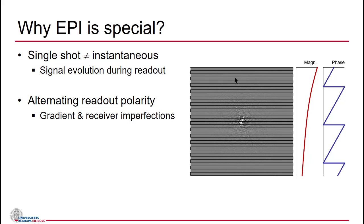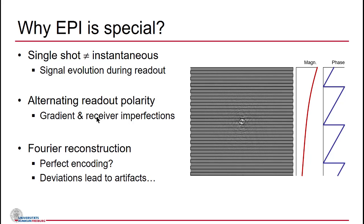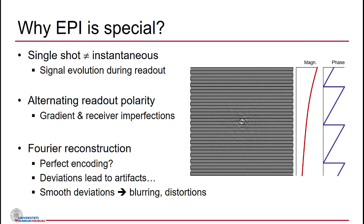There's something special about EPI: because of the alternating gradients and the imperfections of gradients and the receiver, artifacts arise. After encoding, we reconstruct by applying an inverse Fourier transformation, which assumes perfect encoding — so all imperfections lead to artifacts. Things which are smooth or global in k-space lead to local artifacts such as blurring or distortions, while things which are periodic in k-space lead to ghosting. Wally quite nicely explained that point already.